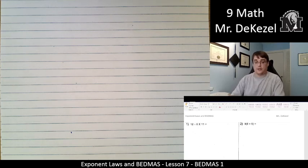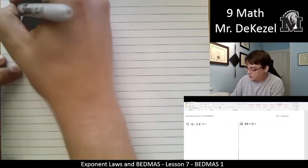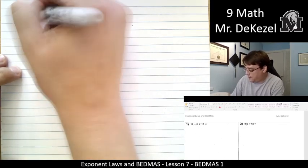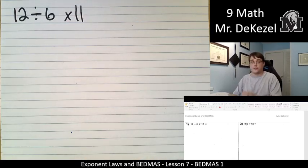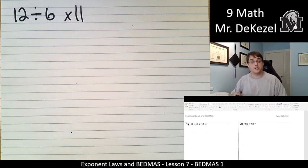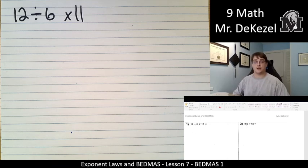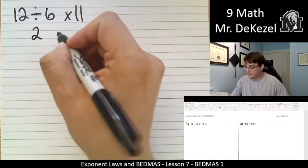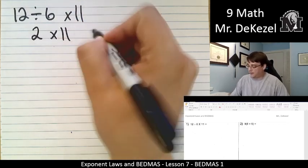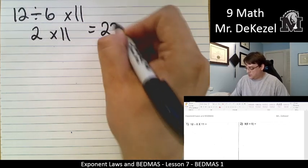Let's do the first one. We've got 12 divided by 6 times 11. We are going to do this in order from left to right because it is all division and multiplication. There is no brackets, no exponents, so there's no addition and subtraction. It's just left to right. 12 divided by 6 is 2, and then multiplied by 11 is 22.